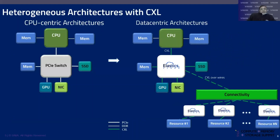Let's look at heterogeneous architectures with CXL. Traditionally, for the last 40 years, there was always a CPU-centric architecture where control always resided inside the CPU. All devices were target devices from the CPU's perspective, and data always had to be sent back to CPU memory for transformation before being sent to other devices in the server hierarchy.